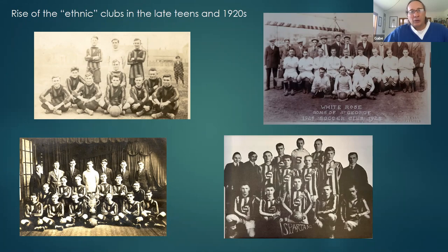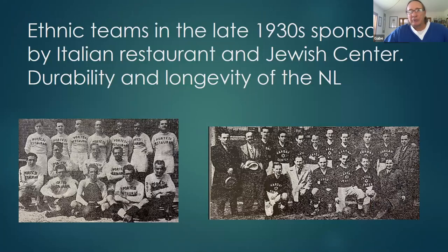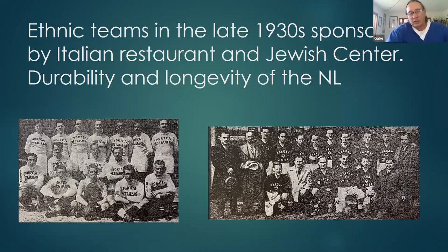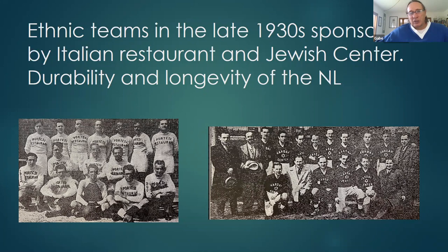A couple of other teams demonstrate the longevity of the International Soccer League, playing in the late 1930s. You see the Italian team on the left, the Maroons, sponsored by local restaurants that were helping out during the Great Depression. On the right is one of the many fine Jewish teams in Chicago. Again, you get a sense of the pride of the people dressing up to make sure they're part of the image.